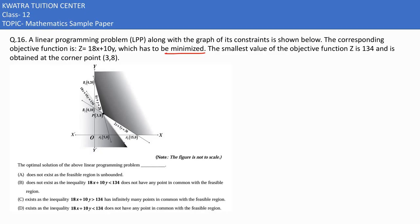The minimum value of Z is 134, and they are saying it is obtained at the corner point which is 3,8. This is the point.